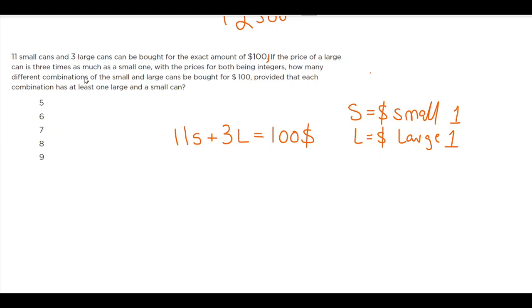So this L is basically, if the price of the large is three times as much as a small one, so the large is three times the small can.